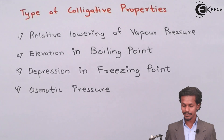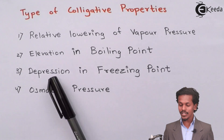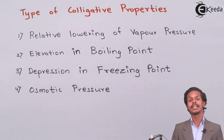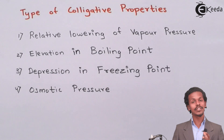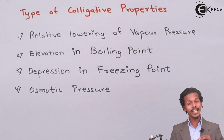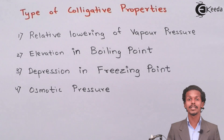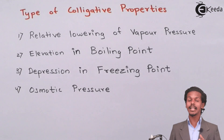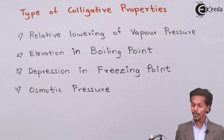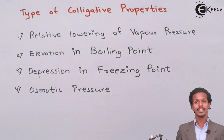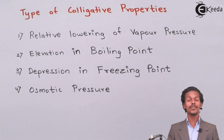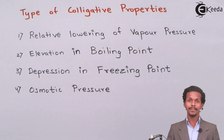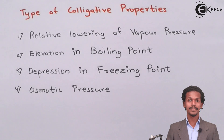The next is depression in freezing point — we can decrease the freezing point of a solution by adding a few amounts of solute particles in the solution. And the last one is osmotic pressure. So these are the few colligative properties that we are going to study.